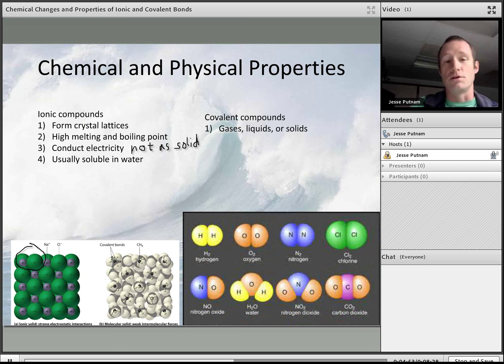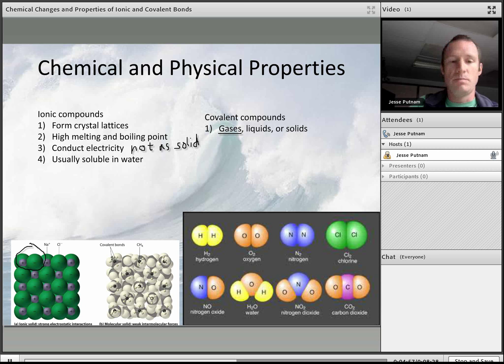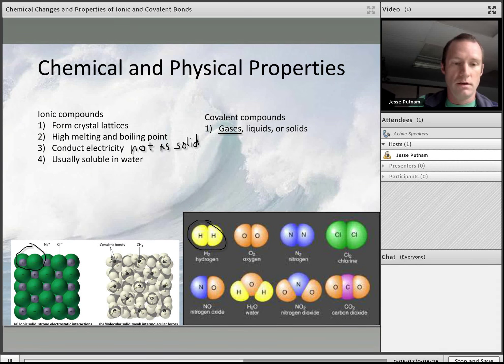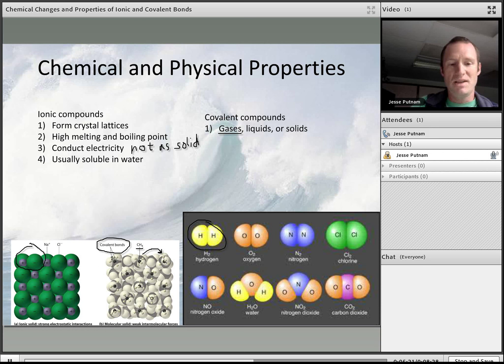The reason why these are usually gases is because the bonds in covalent compounds, as you can see here, are very strong, holding these molecules together. For example, the covalent bonds in this methane here, holding these four hydrogens to this one carbon in the middle in this molecule CH4.